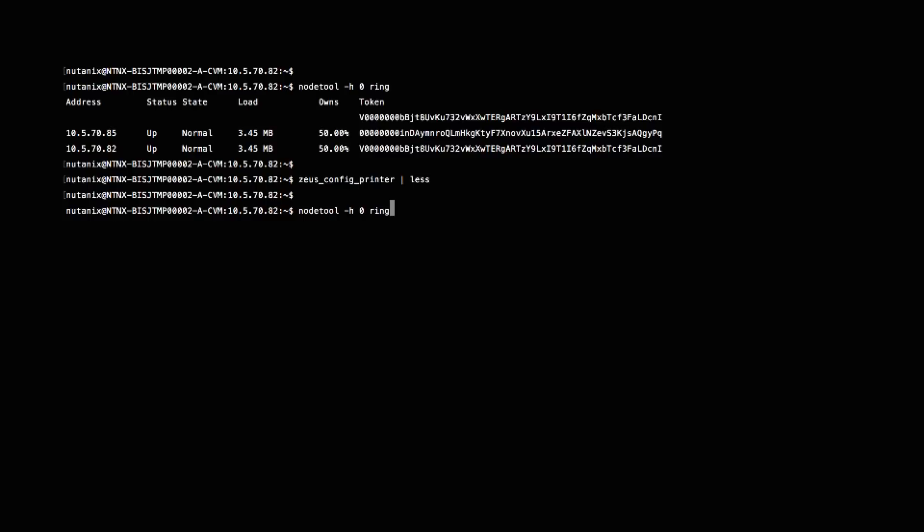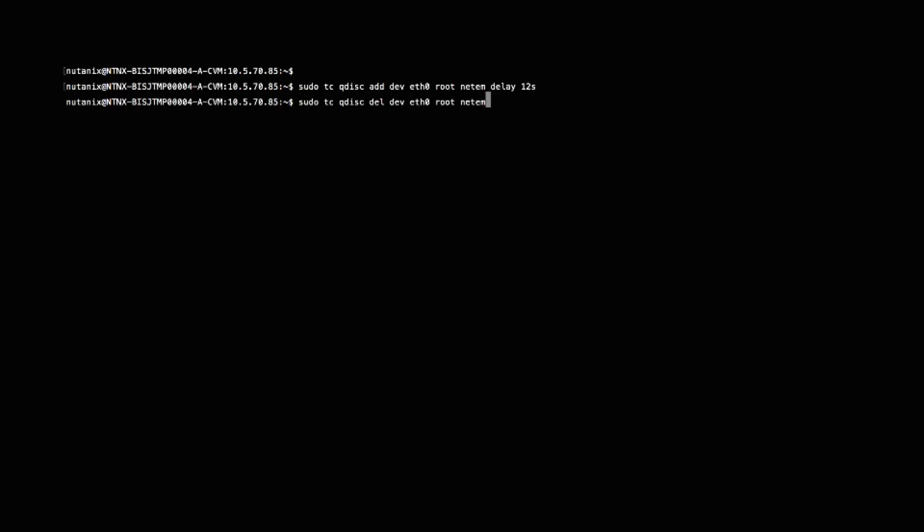If I run the node tool command again, I see that node B has been removed from the ring and node A owns 100% of the metadata. Now I'm going to reset the delay in node B.